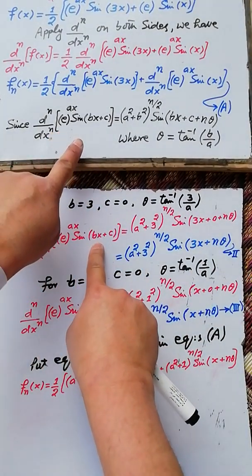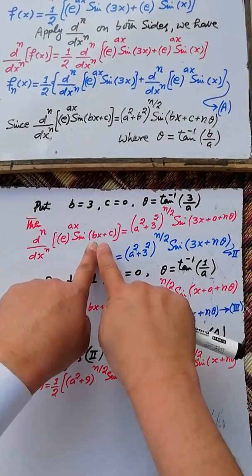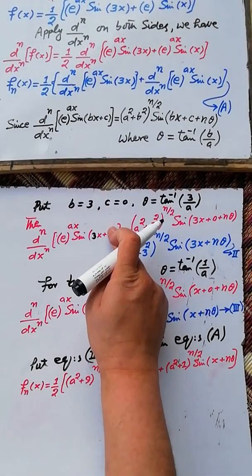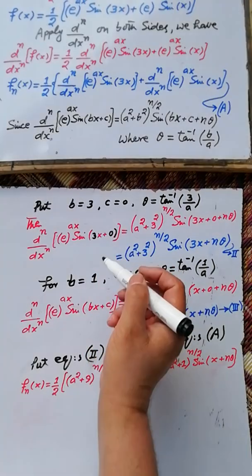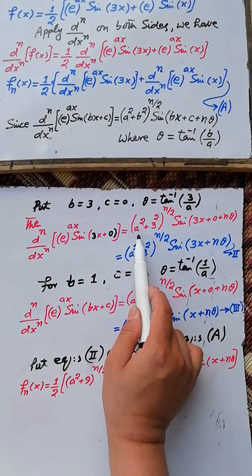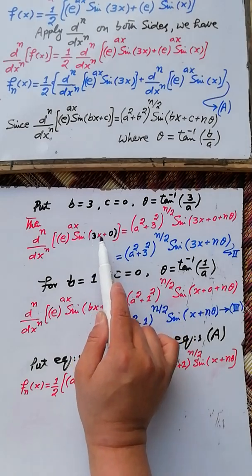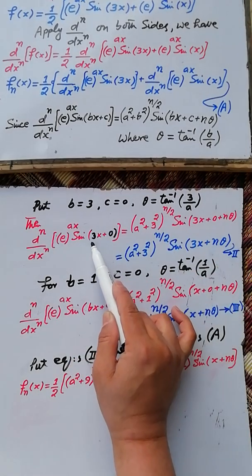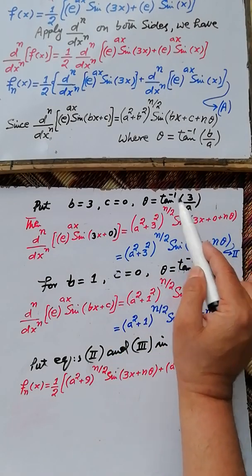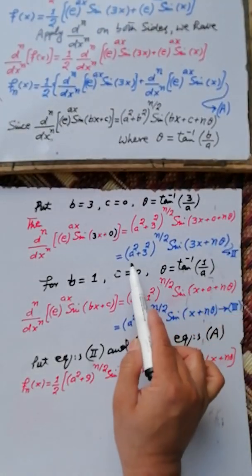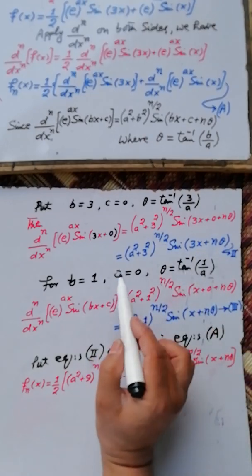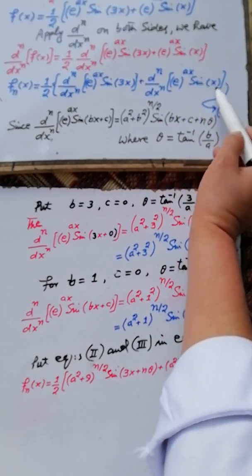Applying this formula, the nth derivative of e raise power ax sin(3x): putting b = 3 and c = 0, we get the nth derivative of e raise power ax sin(3x) = (a² + 3²)^(n/2) times sin(3x + n·θ), which simplifies to (a² + 9)^(n/2) sin(3x + n·θ), where θ = tan⁻¹(3/a).